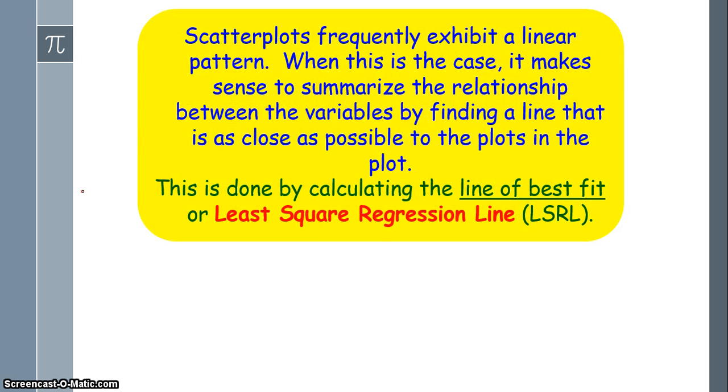Here we go. Scatter plots frequently exhibit a linear pattern. This makes sense, right? Scatter plots are usually showing bivariate quantitative data, or bivariate quantitative data sets, I should say. And that's perfect for regression analysis. When this is the case, it makes sense to summarize the relationship between the variables by finding a line that is as close as possible to the plots in the plot. If that doesn't make sense, don't worry about it. This is done by calculating the line of best fit, or the least square regression line.